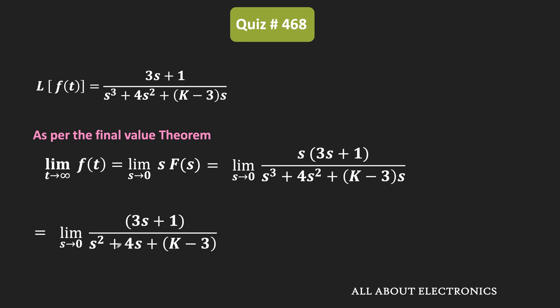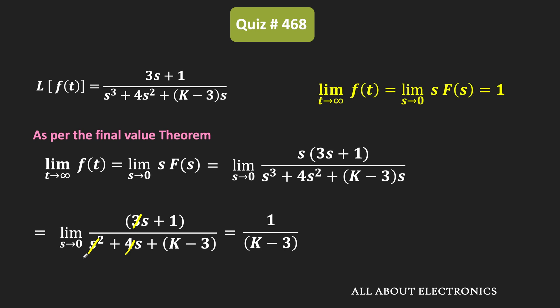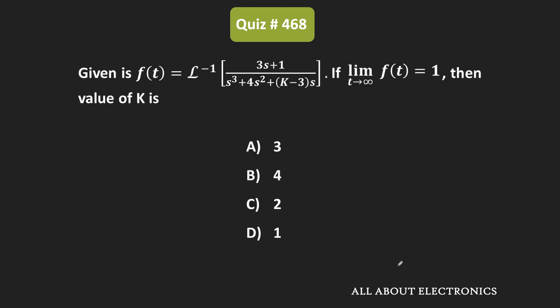As s→0, the terms with s go to zero, giving us 1/(k−3). That is the value of the function at t = infinity. Since we are given that f(∞) = 1, we set 1/(k−3) = 1, which means k−3 = 1, and therefore k = 4. So option b is the correct answer.